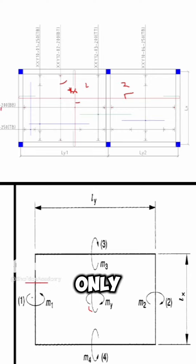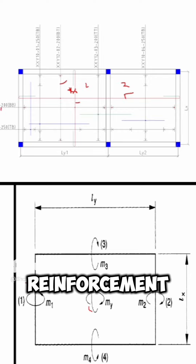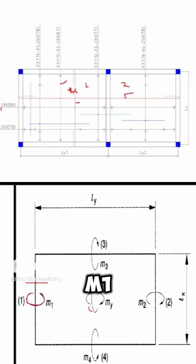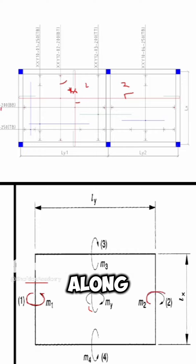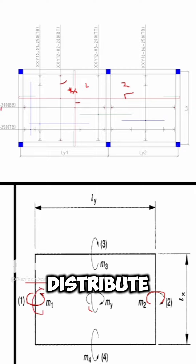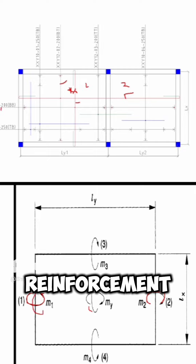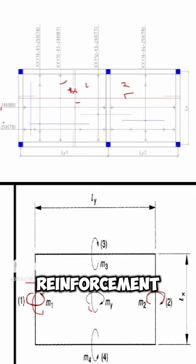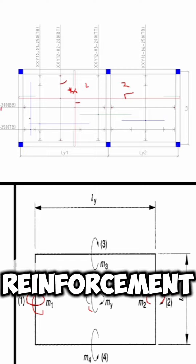At this end you only have reinforcement along the y, which is m1, and at the other end you only have reinforcement along the y as well, which is m2. So you need another reinforcement to counterbalance and distribute this reinforcement — that is what we call the distribution reinforcement.